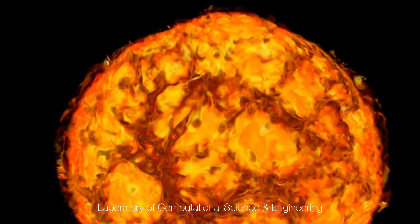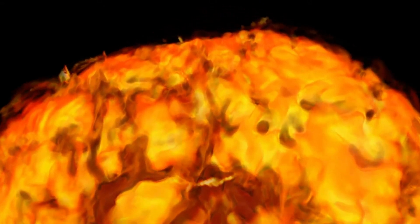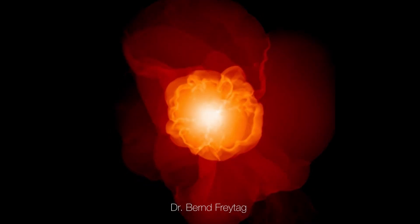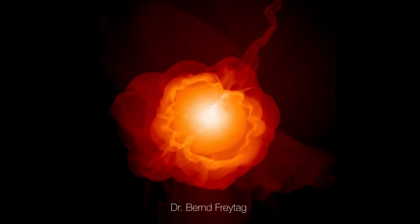Betelgeuse, a star located in the constellation Orion, shines about 100,000 times brighter than our sun. But as we know, the more massive a star, the faster it burns through its fuel.